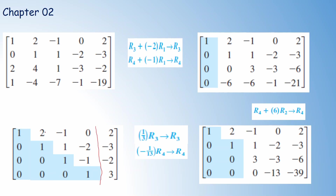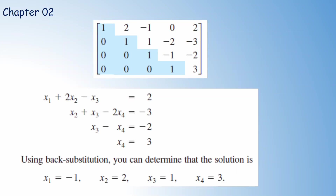There is no zero row; all leading entries along the main diagonal are 1, and all entries below each pivot are 0. We can now write the equivalent system: x1 plus 2x2 minus x3 equals 2 (first row); x2 plus x3 minus 2x4 equals minus 3 (second row); x3 minus x4 equals minus 2 (third row); x4 equals 3 (last row). We now use backward substitution to find the solution.